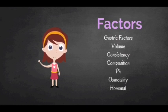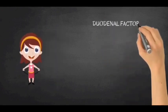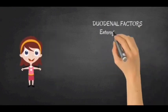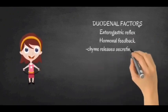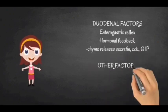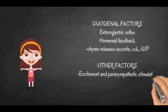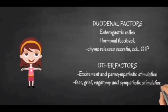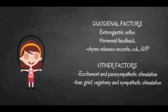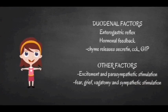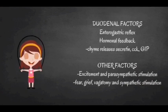Hormonal factors: distension of the stomach causes gastrin release. Pyloric pumping promotes gastric emptying. Any duodenal factors causing gastric inhibition include acidity or protein content acting via ENS inhibitory impulses from the duodenum to the stomach, then via inhibitory sympathetic fibers through sympathetic ganglia, ultimately inhibiting gastric emptying.